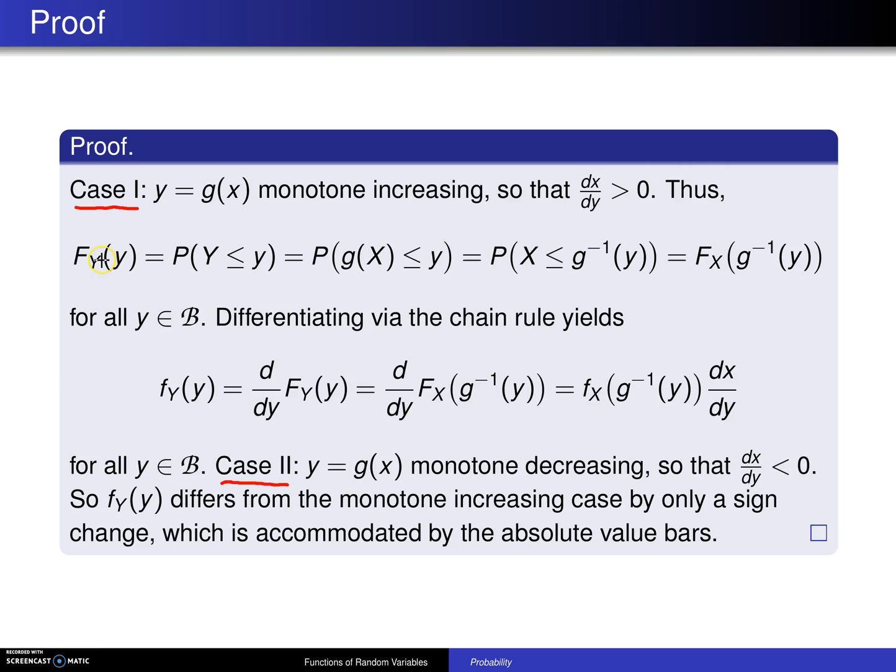So in this particular case, the CDF of Y will, by the definition of a CDF, be the probability that the random variable Y is less than or equal to y. So you can replace Y with g(X) because you know Y = g(X) is the transformation of interest.